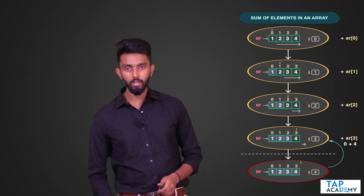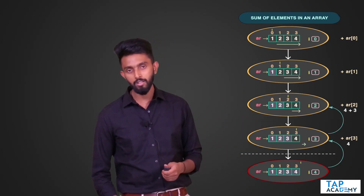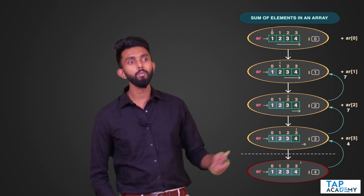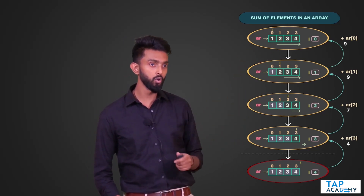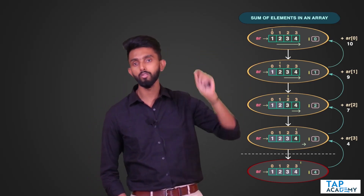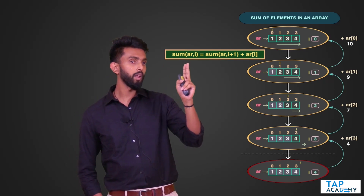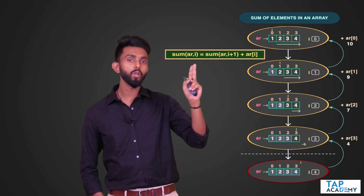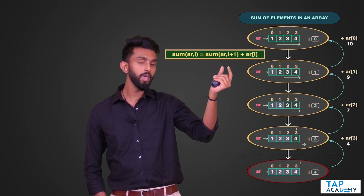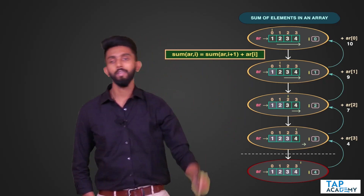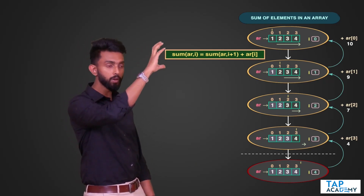When there are no elements, the sum is 0, so return 0. Then: 0 + AR[3] = 4, return 4; 4 + AR[2] = 7, return 7; 7 + AR[1] = 9, return 9; 9 + AR[0] = 10. And 1+2+3+4 = 10. The recurrence relation is: sum(AR, I) = AR[I] + sum(AR, I+1).